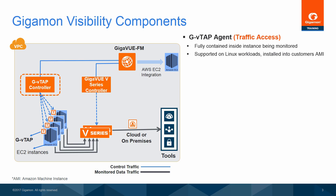The following are the components of the Gigamon Visibility Platform Solution in AWS. A GVTAP is a user space agent deployed in the Elastic Compute Cloud, EC2, instance. The GVTAP agent is typically deployed by installing the agent on a workload, then saving that workload as an Amazon Machine Image, or AMI, so that as new workloads are deployed from the AMI, the agent is installed and running.